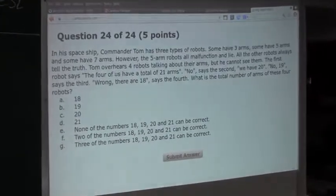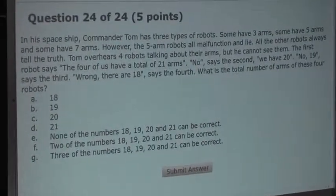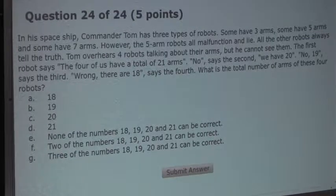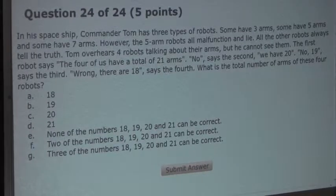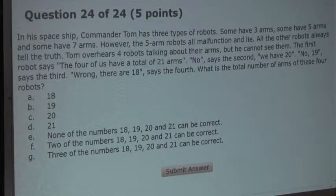So the question is, in a spaceship, Commander Tom has three types of robots. Some have three arms, some have five arms, and some have seven arms. However, the five arm robots all malfunction and lie. All the other robots always tell the truth.